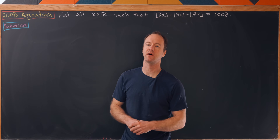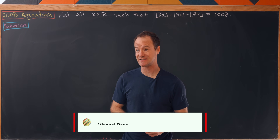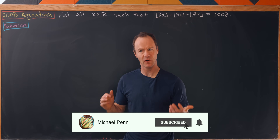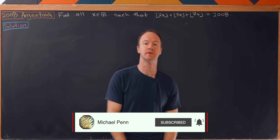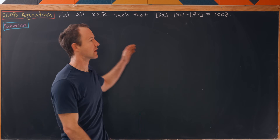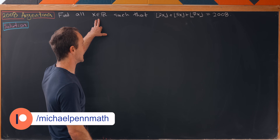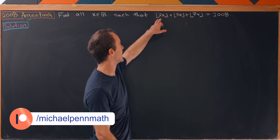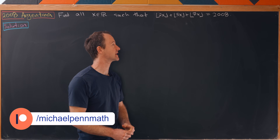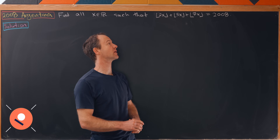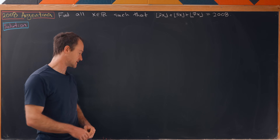Today I've got a really nice problem from the 2008 Argentina Math Olympiad and it involves one of my favorite functions, the floor function. Our goal is to determine all real numbers x such that the floor of 2x plus the floor of 3x plus the floor of 7x equals 2008.